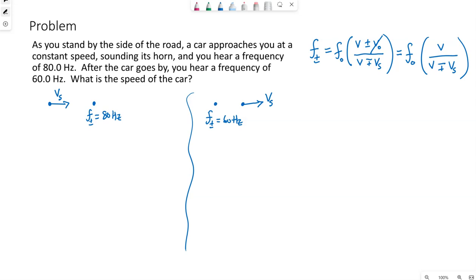So this problem, by giving us a specific frequency we're hearing, is essentially assuming the car's driving directly towards us, so essentially we're standing in the middle of the road, and then somehow we magically jump out of the way and then jump back to the middle of the road to hear the 60 hertz. I know that's a little silly, but just trying to simplify the problem a little bit for us.